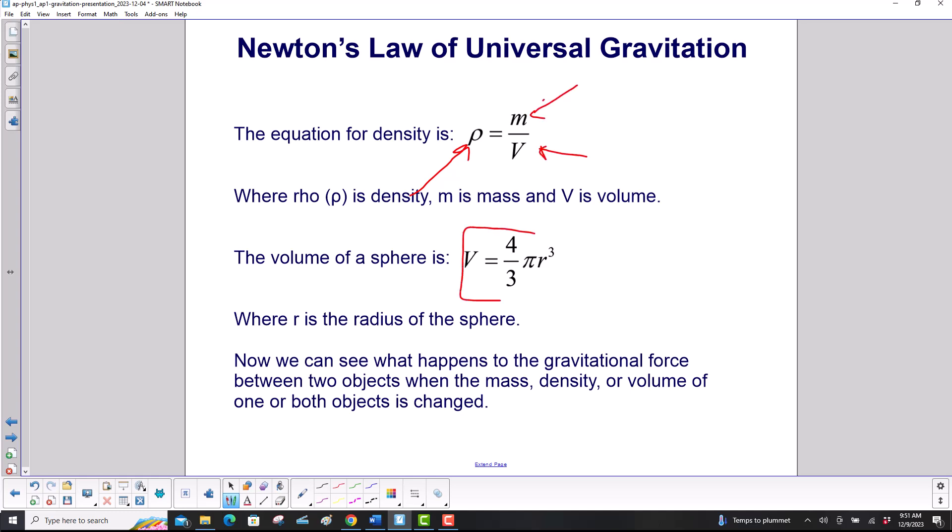The volume of a sphere is 4 thirds π r cubed, where r is the radius of the sphere. Now we can see what happens to the gravitational force between two objects when the mass, density, or volume of one or both objects is changed.